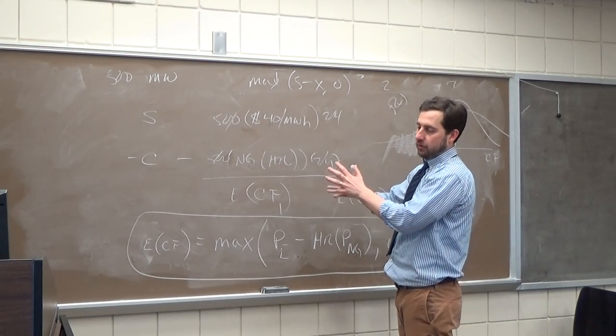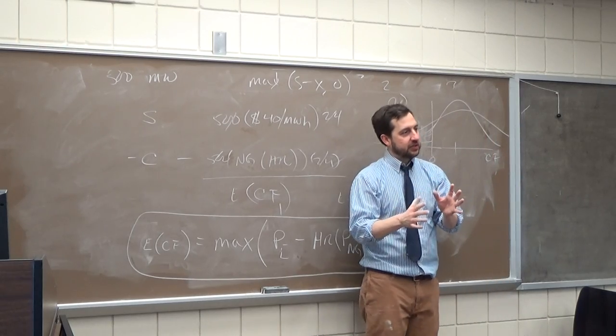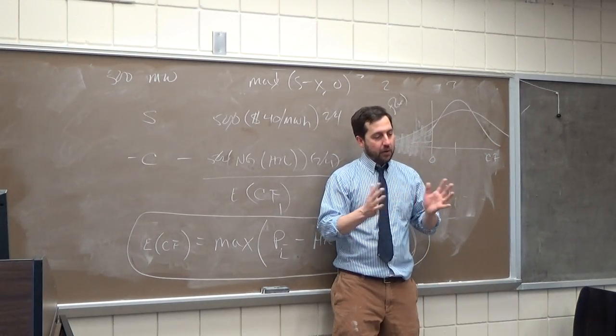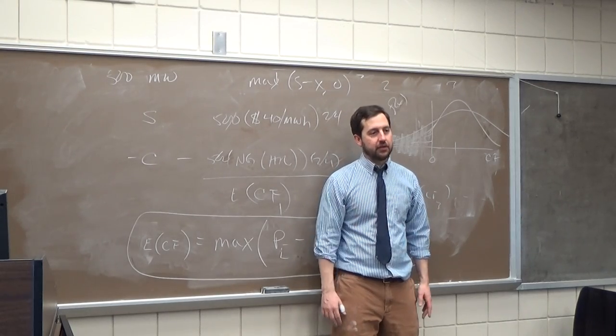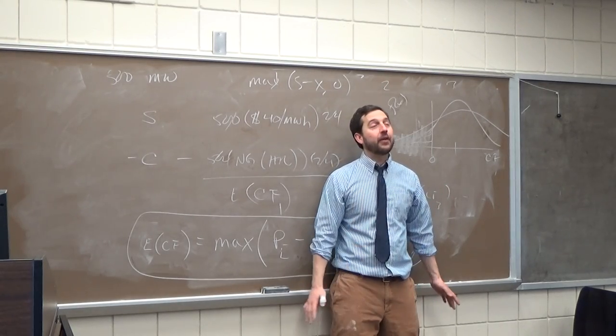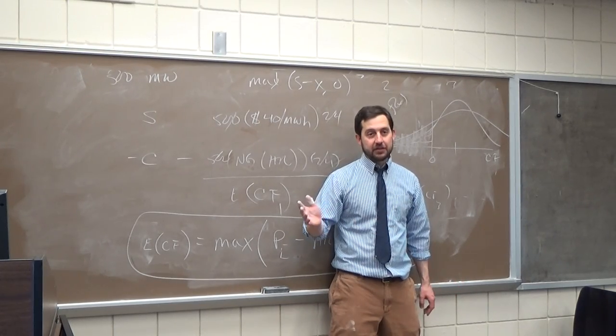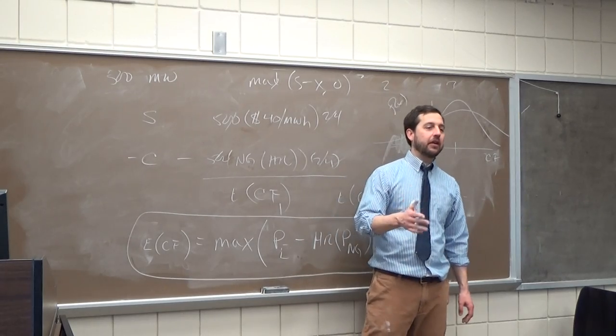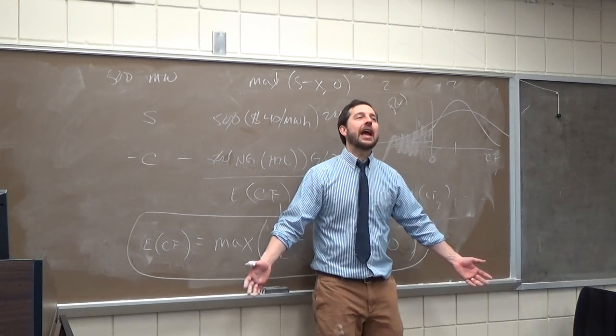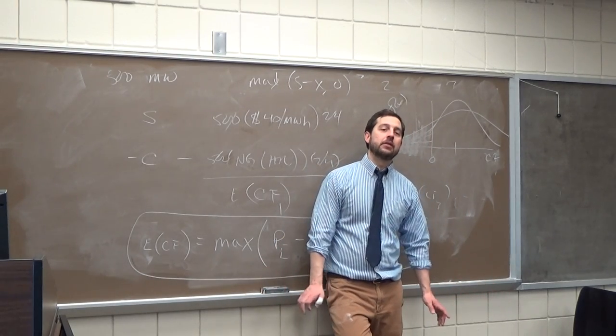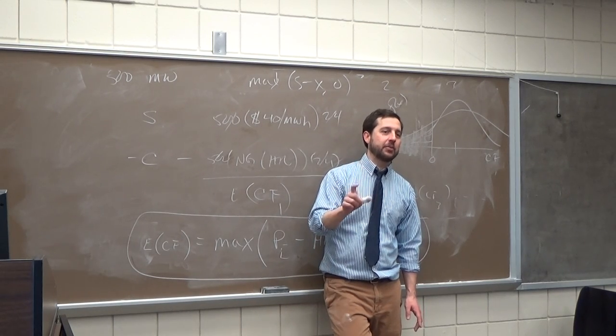So one thing I want to get across is in your text, two very simple examples of real options, but if there's any capital budgeting question, I can look at it and find options in it. In fact, the very famous paper, Black-Scholes '73, which laid out option pricing methodology, actually used it to value the equity in a company. They didn't use it to value stock options. In other words, can you think of the equity in the company as an option?